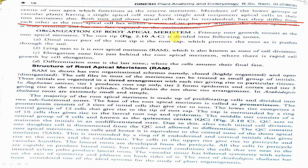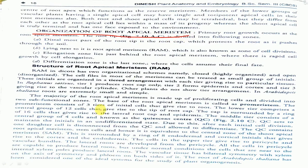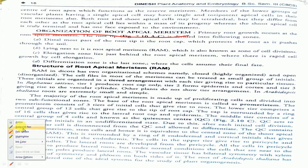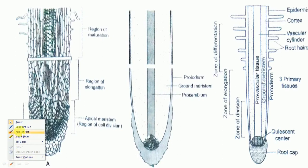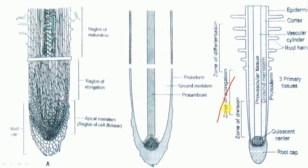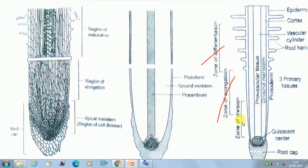Now we will discuss the organization of root apical meristem. In the diagram we can see various zones: the first is the zone of division, the second is the zone of elongation, and the third is the zone of differentiation. So there are three total zones in its organization.